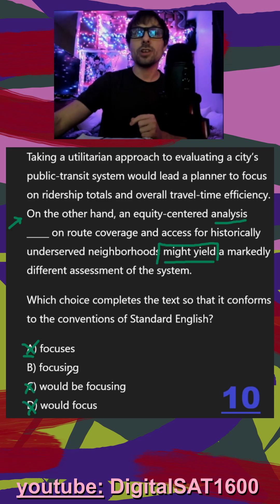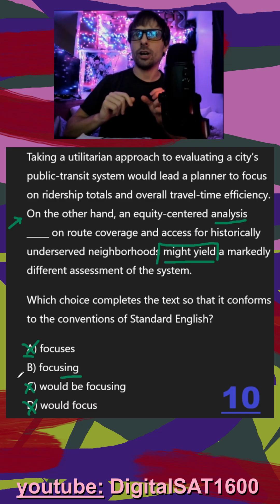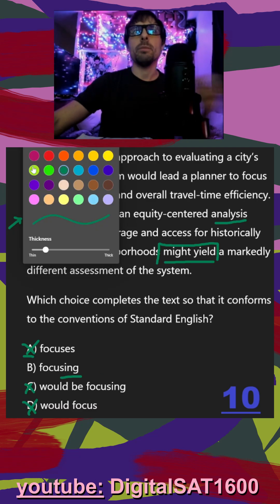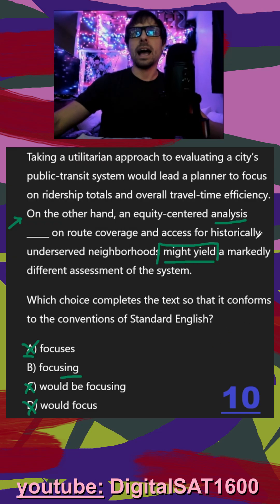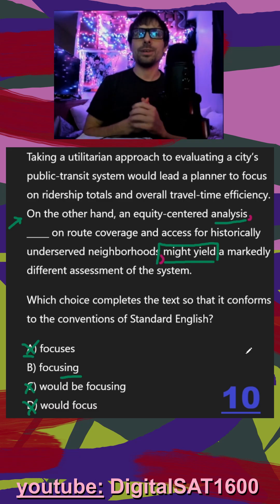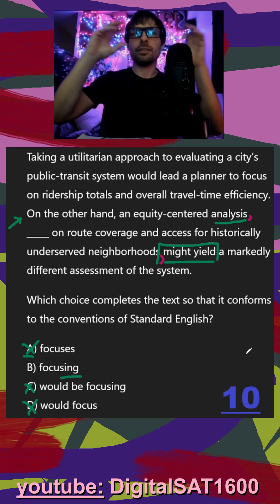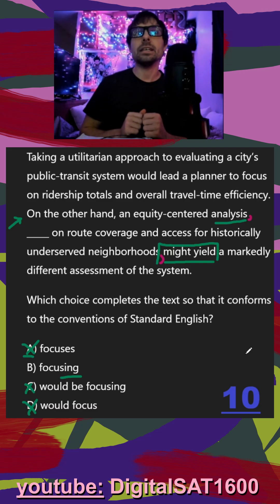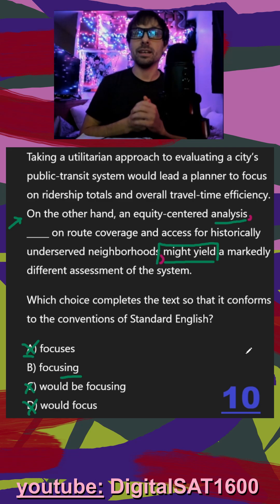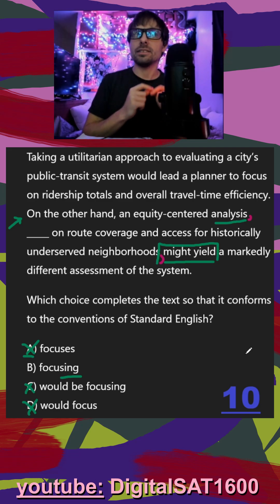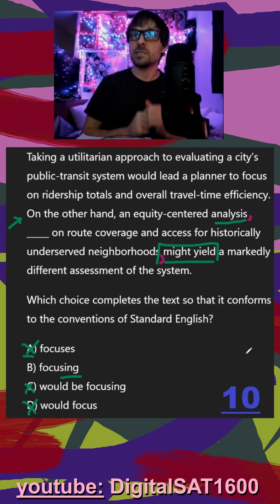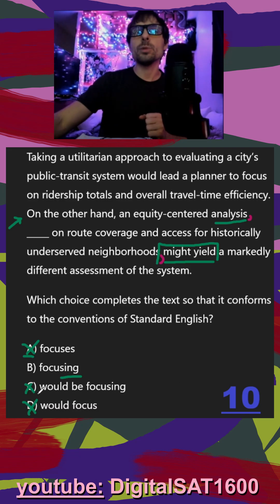That just leaves our -ing verb 'focusing' as kind of creating a non-essential clause. Imagine if we put commas after 'analysis' and before 'might yield.' Now it's saying this equity-centered analysis might yield a different assessment of the system. Our non-essential clause would be describing our analysis — focusing on this specific stuff. So we know that B is definitely going to be our right answer here.